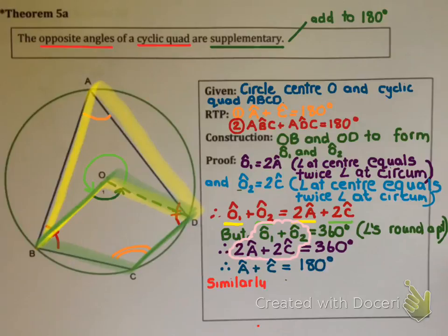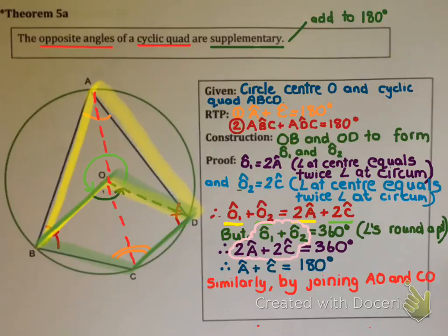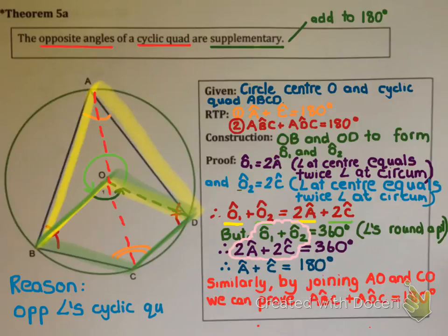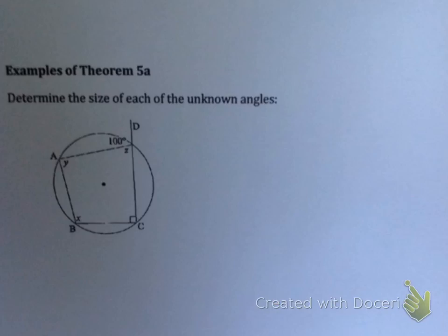For number 2, I could do the exact same proof by constructing radii AO and CO and arguing the same argument. So similarly, by joining AO and CO we can prove that angle ABC plus angle ADC equals 180 degrees. In a test or exam they'll never ask you to prove both — they'll ask you to prove one specific pair. The reason we use when the opposite angles are supplementary is: opposite angles of a cyclic quad.